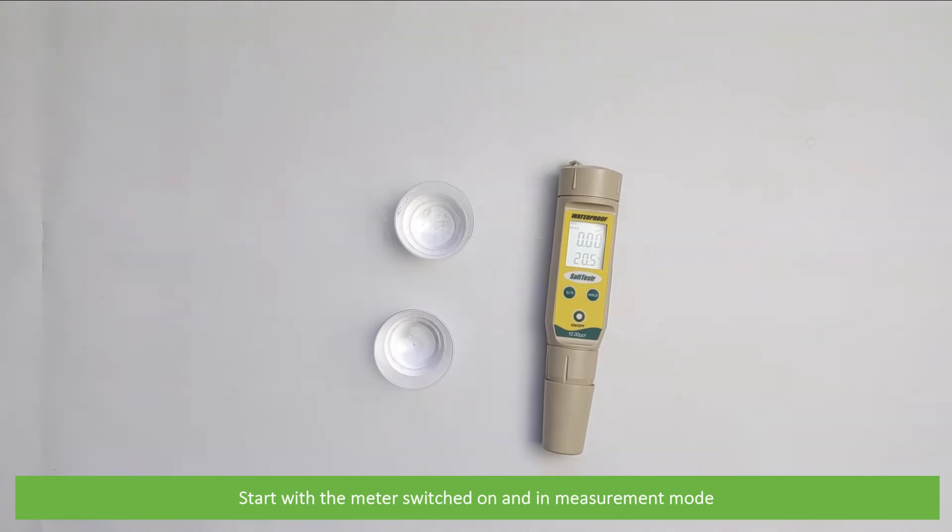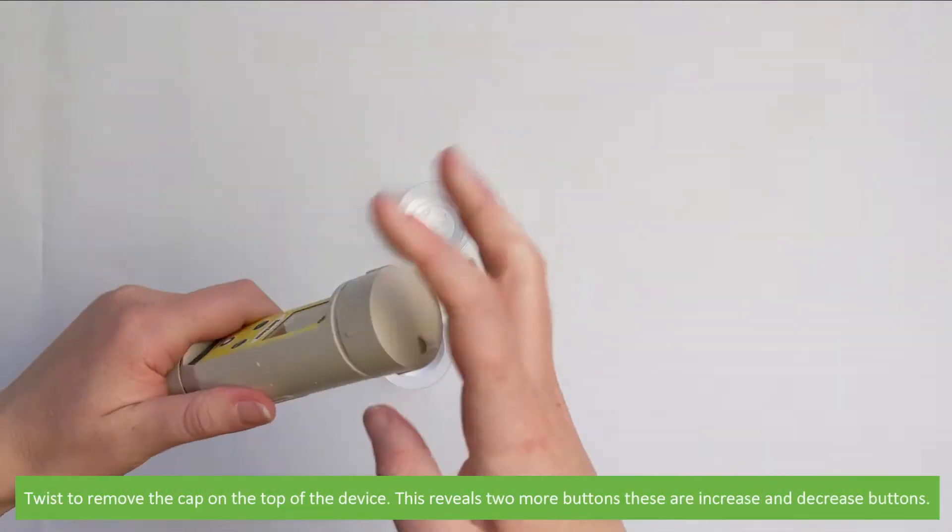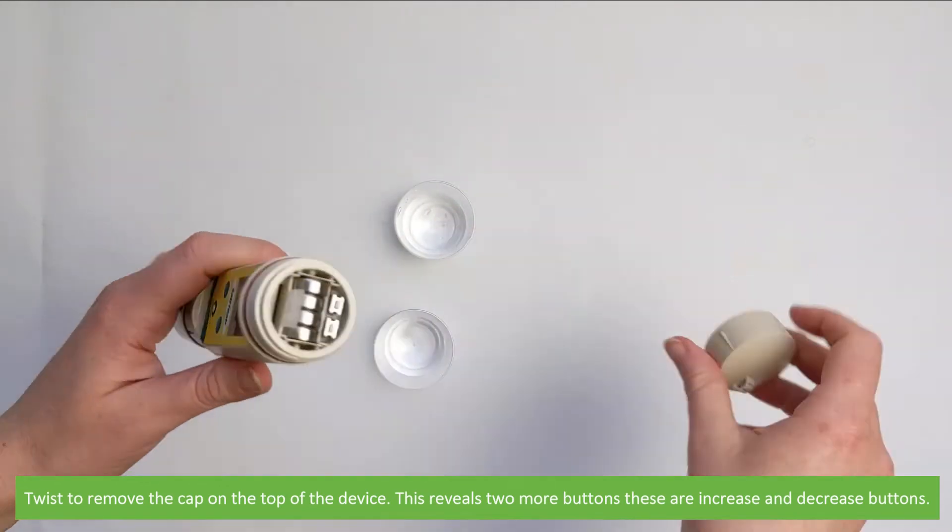Start with the meter switched on and in measurement mode. Twist to remove the cap on the top of the device. This reveals two more buttons, these are increase and decrease buttons.